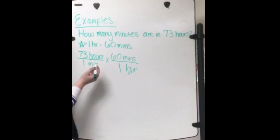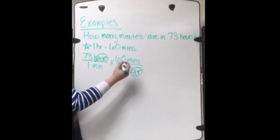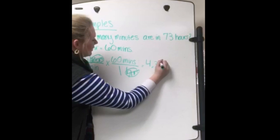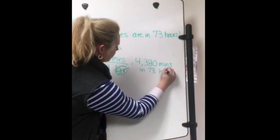So you're going to take your hours and they're going to cancel out when you multiply. This is why we put hours on top and hours on the bottom. And then you're going to multiply 73 by 60 and that will give you your answer of 4,380 minutes in 73 hours.